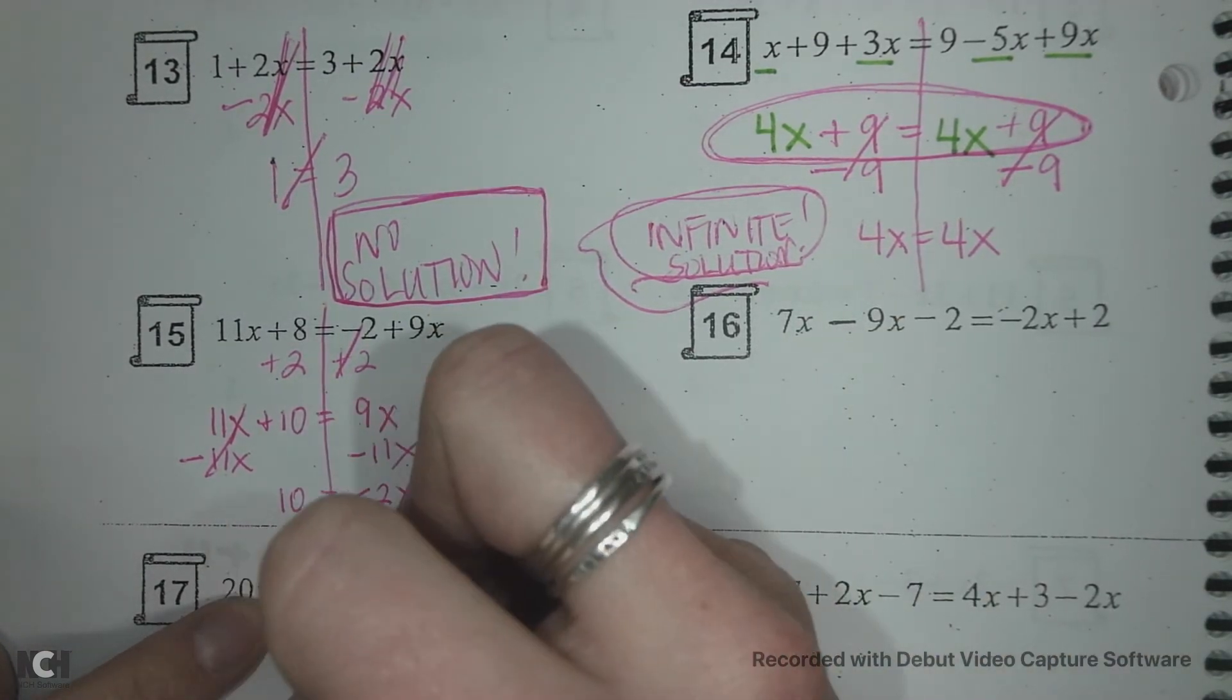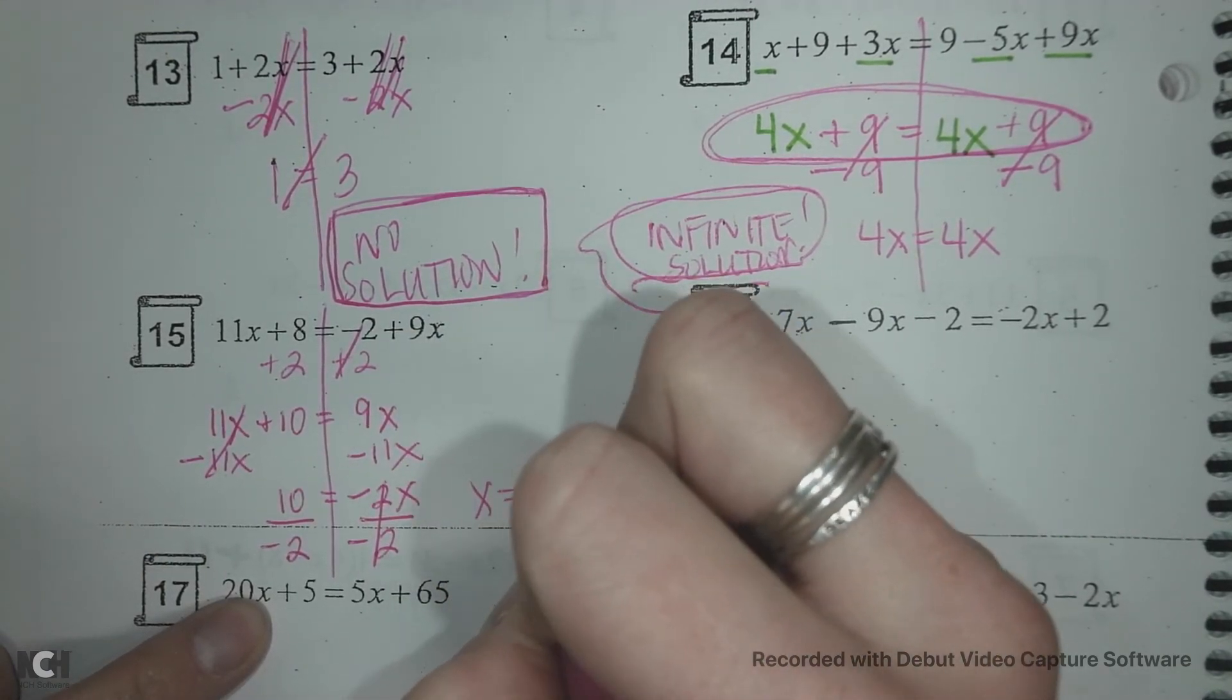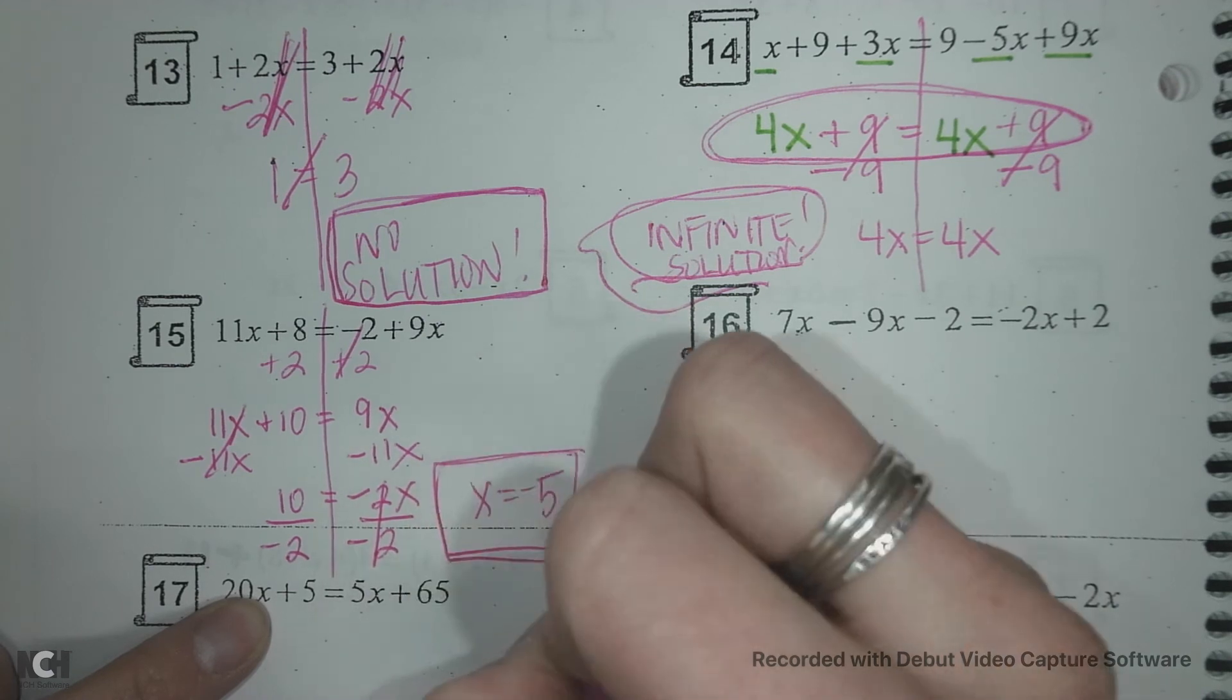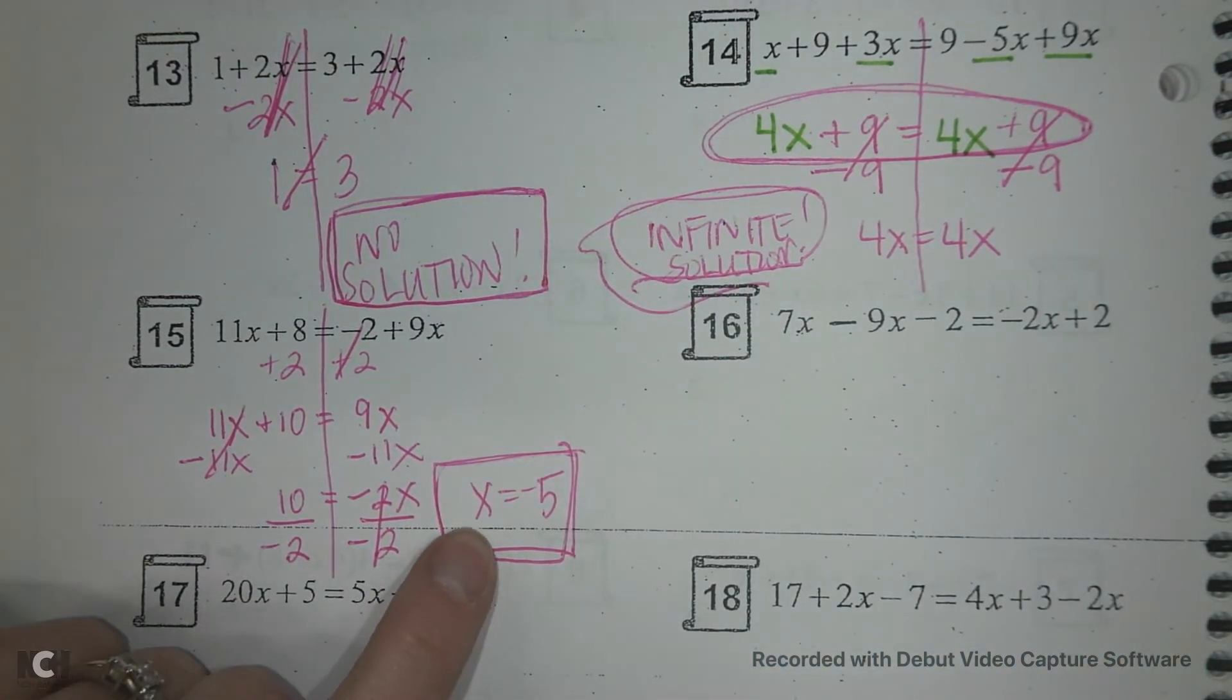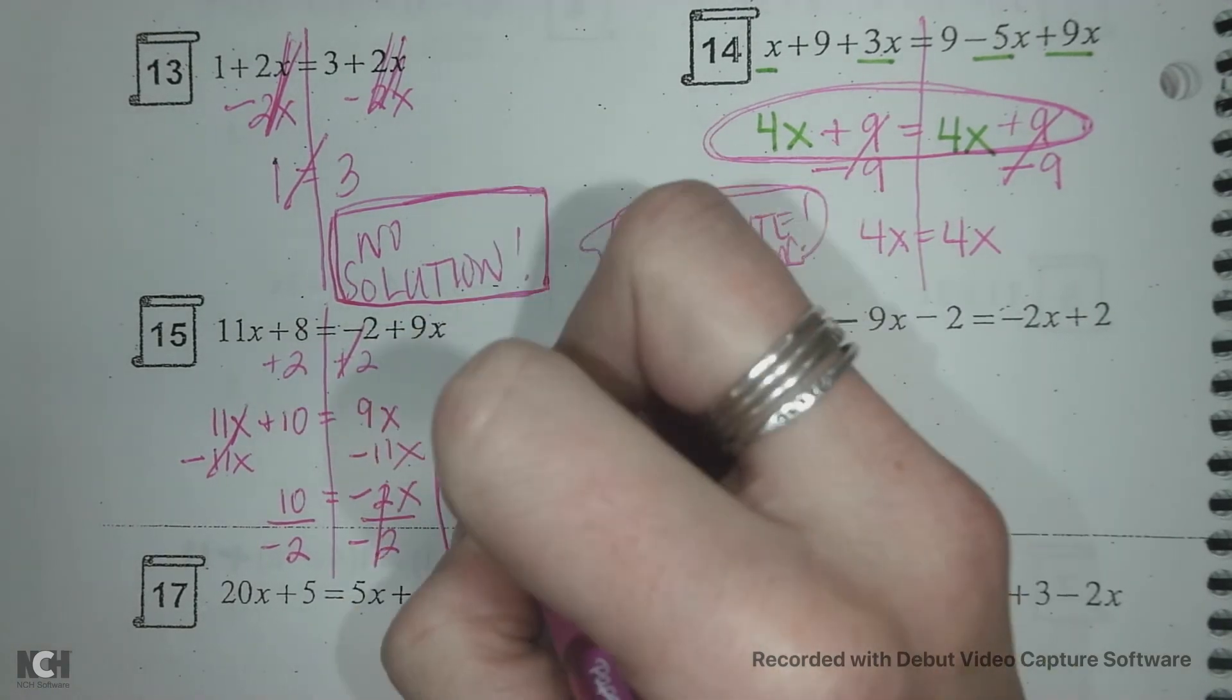And we have 10 equals 9 minus 11 is negative 2x's. Then we're going to divide each side by negative 2 and x equals negative 5. So this is a one solution because I ended up with one letter and one number. One solution.